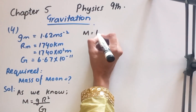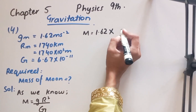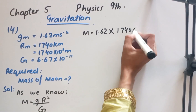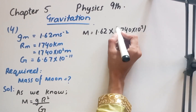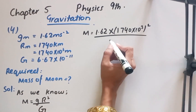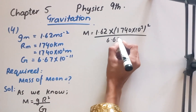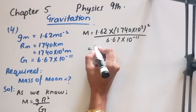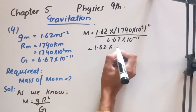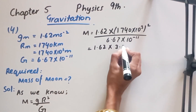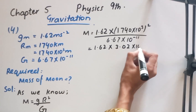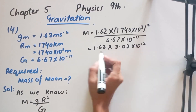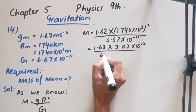The value of g is 1.62 m/s², the value of r is 1740 × 10³, and the value of gravitational constant G is 6.67 × 10⁻¹¹. First, we calculate the square of the radius, which gives 3.02 × 10¹² over 6.67 × 10⁻¹¹.